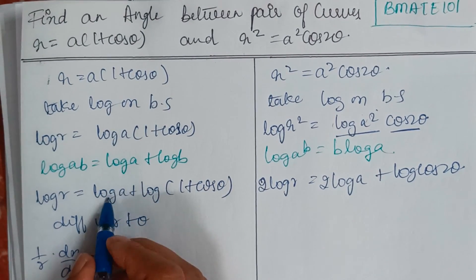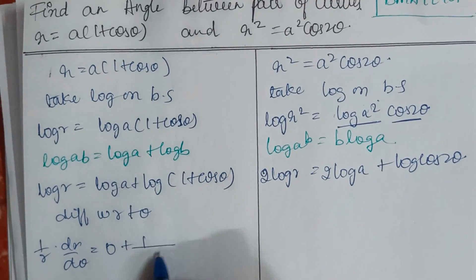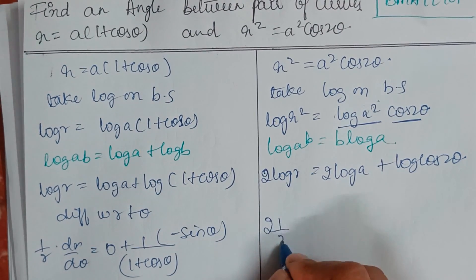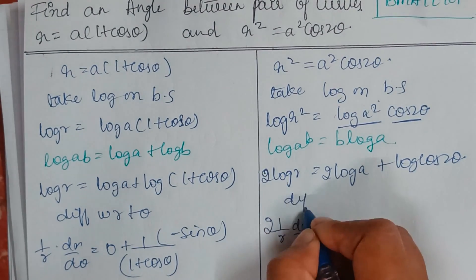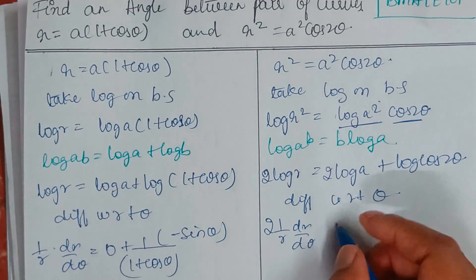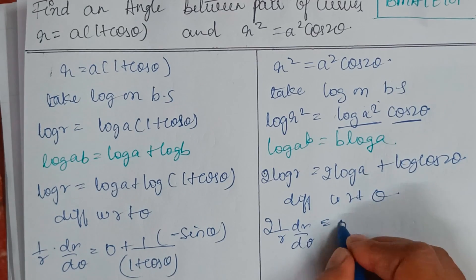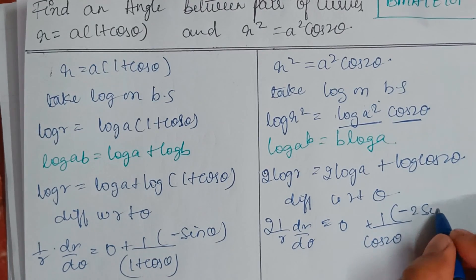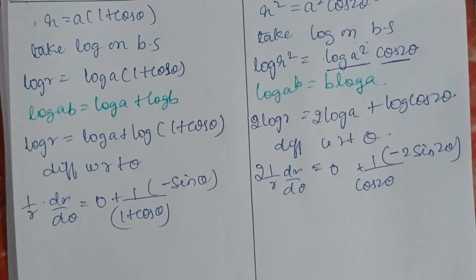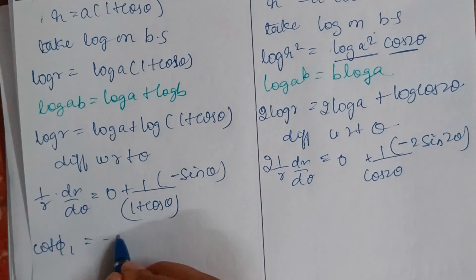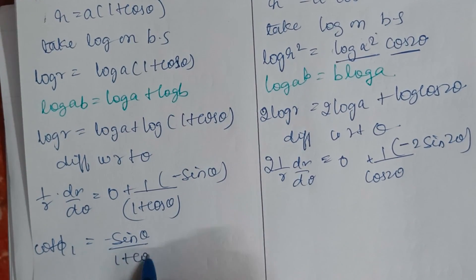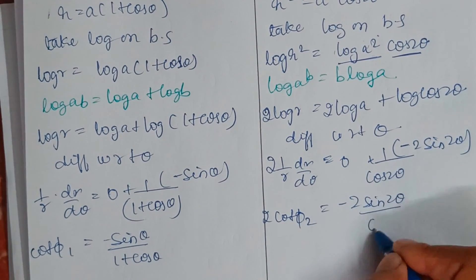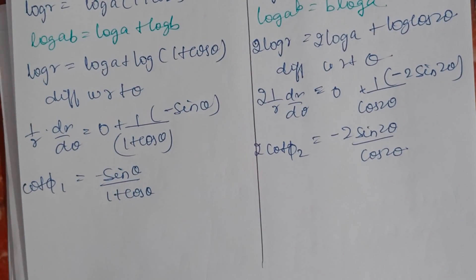Differentiating the first equation with respect to θ: (1/r)·(dr/dθ) = 0 + [−sin θ / (1 + cos θ)]. Differentiating the second equation with respect to θ: 2·(1/r)·(dr/dθ) = 0 + [−2 sin 2θ / cos 2θ]. So cot φ₁ = −sin θ / (1 + cos θ), and 2·cot φ₂ = −2 sin 2θ / cos 2θ.